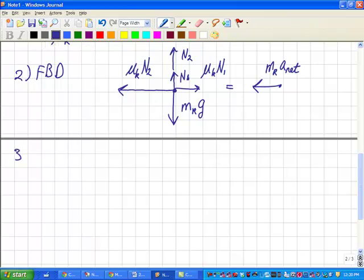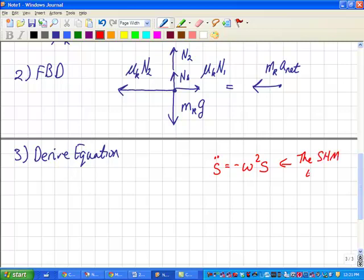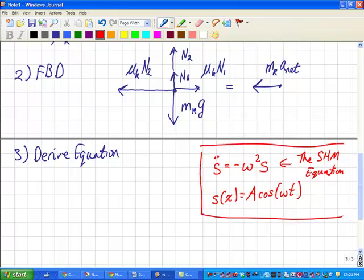Now, step number three is to try to derive an equation. And in this case, we're suspecting that there might be simple harmonic motion here. So the equation that we're trying to find is something that has the form of the simple harmonic motion equation. And whenever we get an equation of this form, then we know that the equation of motion is going to look like a cosine omega t.